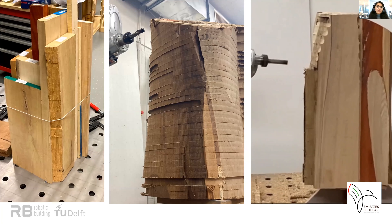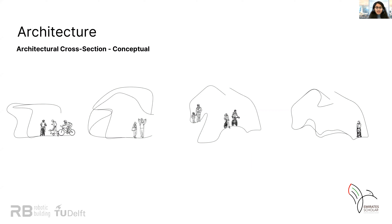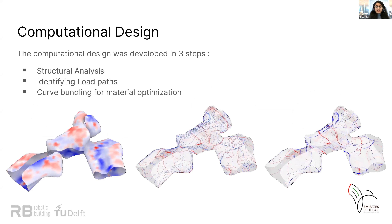We begin by doing a study of a series of architectural cross sections. These cross sections are developed based on certain functional requirements and to create specific spatial experiences such as indoor cycling and walking paths. These cross sections are then put together to design a base morphology, which is then analyzed using structural analysis tools such as Karamba in Grasshopper within the Rhino software. Our first step is to structurally analyze the base morphology and determine where there is maximum load utilization.